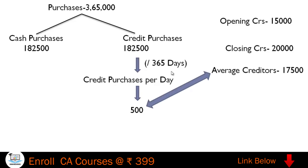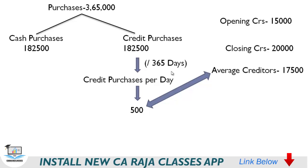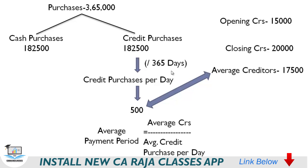Now establishing the relationship: average payment period equals average creditors divided by credit purchases per day. In our case, seventeen thousand five hundred divided by five hundred gives thirty-five days — meaning the company takes thirty-five days to make payment to its creditors.